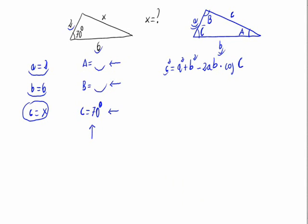And now we know how to do the cosine theorem. So this would be C squared equals 2 squared, plus 6 squared, minus 2 times A, which is 2, and times B, which is 6. And times cosine of B, which is 70 degrees.